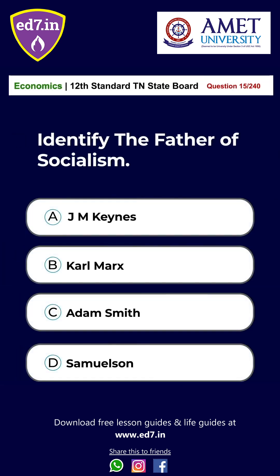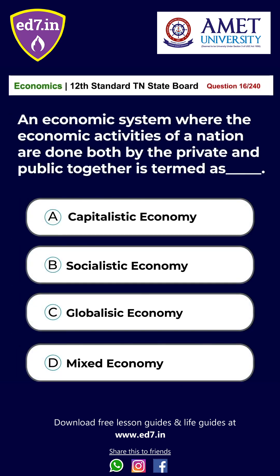Question 15: Identify the father of socialism. A. James Keynes, B. Karl Marx, C. Adam Smith, D. Samuelson. The answer is Option B: Karl Marx. Question 16: An economic system where the economic activities of a nation are done by both private and public together is termed as — A. Capitalistic economy, B. Socialistic economy, C. Globalistic economy, D. Mixed economy. The answer is Option D: Mixed economy.